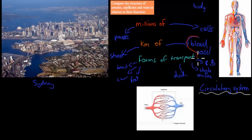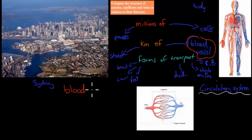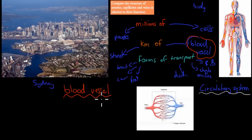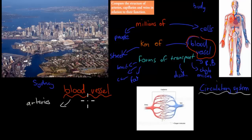Blood vessels is a general term — just like 'streets' is general and can mean a highway, side street, or dead-end street. Within blood vessels we have three different types: arteries, capillaries, and veins.